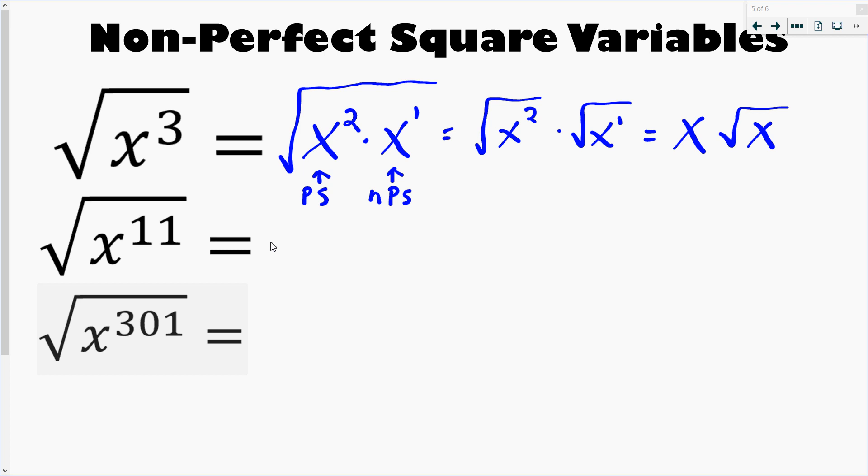So that's the technique, works every time. Watch this: x to the 11, I walk back one, so I write x to 10, which is a perfect square because it's divisible by 2, and then x to the 1 just like that. So now I break it up in two pieces, x to the 10 and then square root of x. The square root of x to the 10, all I got to do is divide this by 2, I get x to the 5 times square root of x.